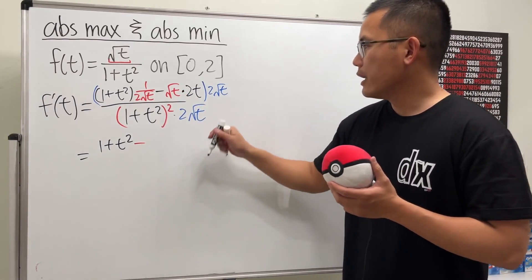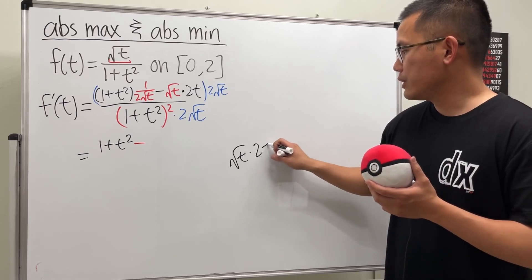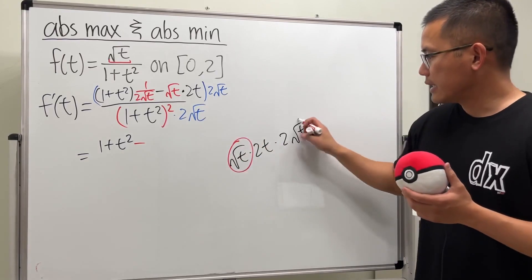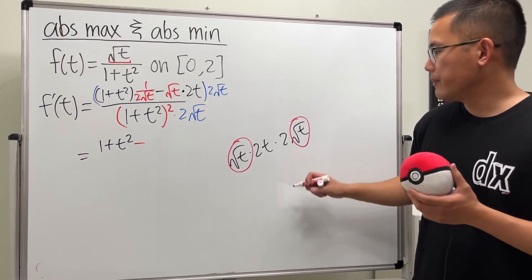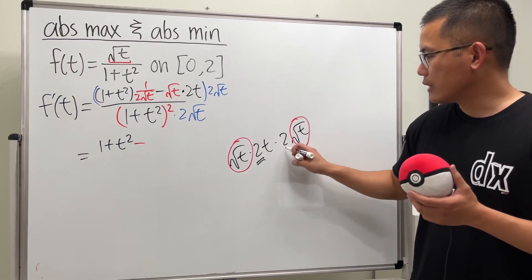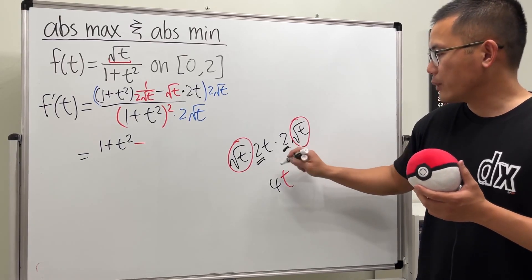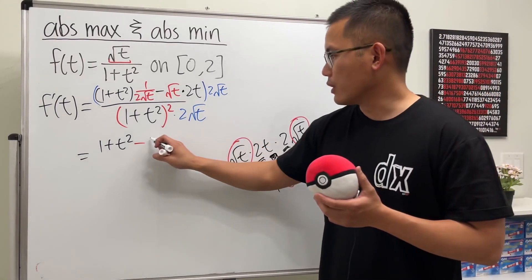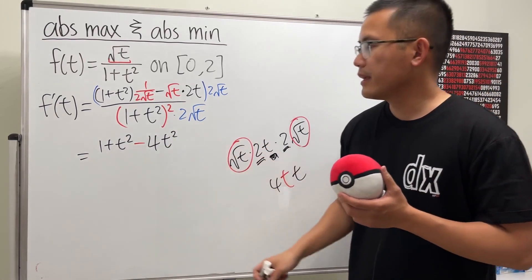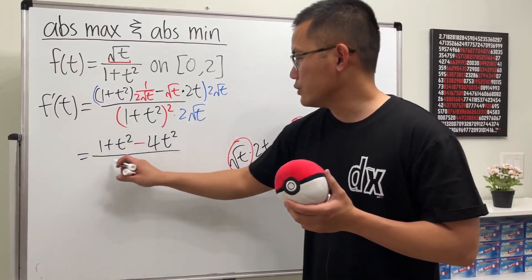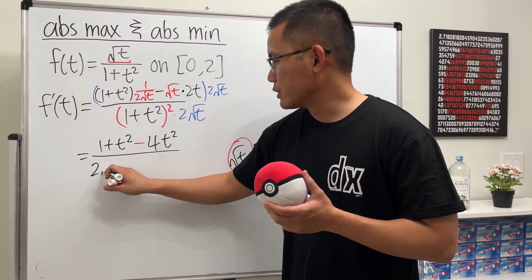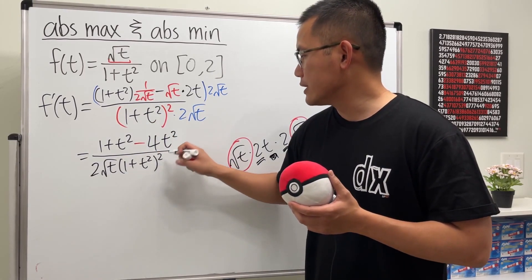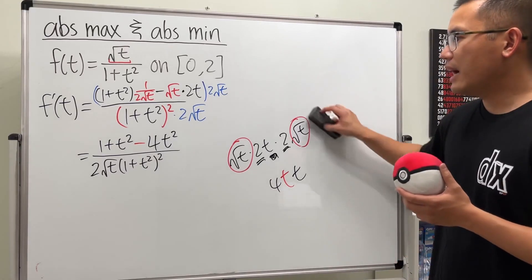We have a minus, and then square root of t times 2t times 2 square root of t. This times that is just t, so we have 2 times 2, which is 4, and this and that is t, but we have another t, so altogether it is 4t squared. Over 2 square root of t in the front, and then 1 plus t squared, and then we square that.